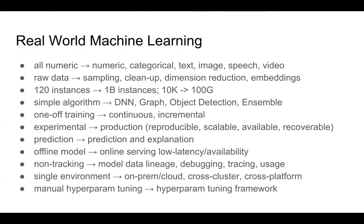You also want helpers like hyperparameter tuning — a framework to sweep combinations of hyperparameters to find the best ones. My point is that real-world machine learning is very different from just running a Python script to train an Iris model.